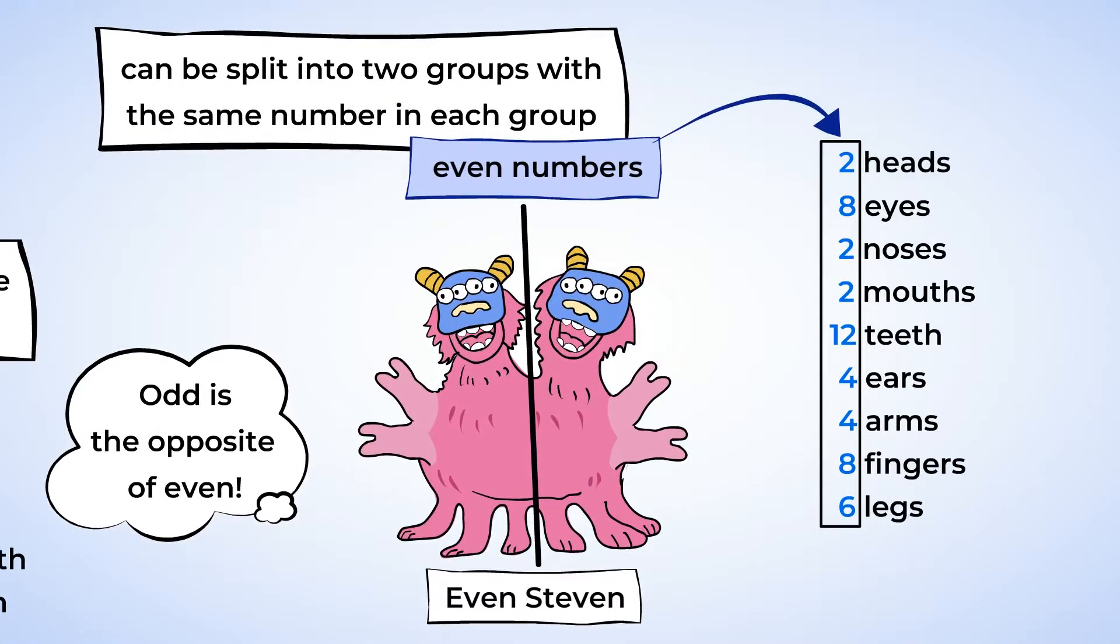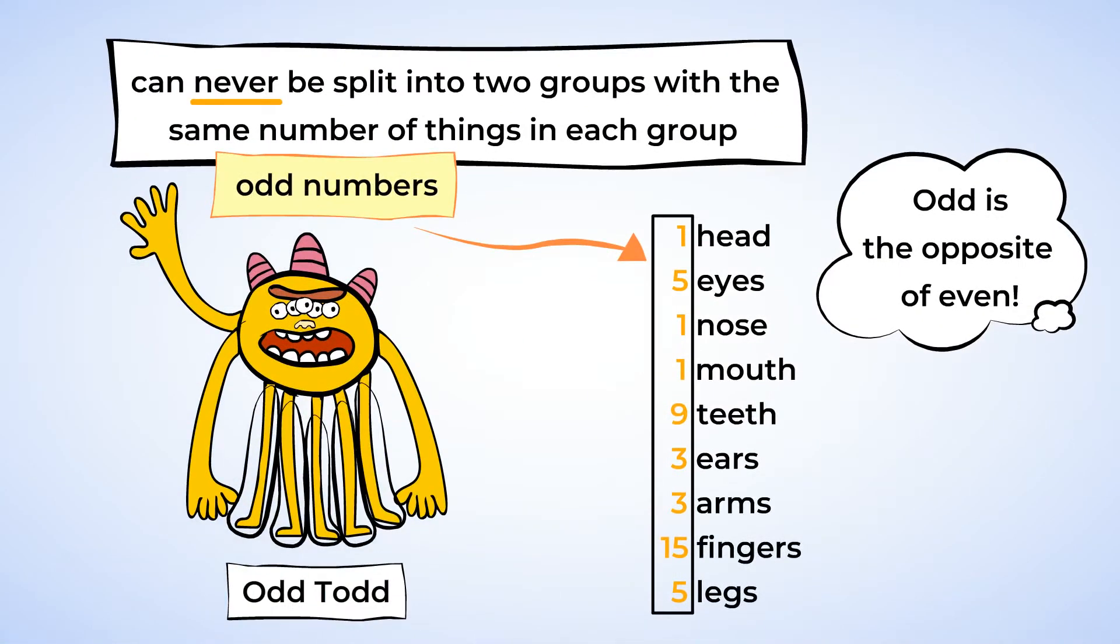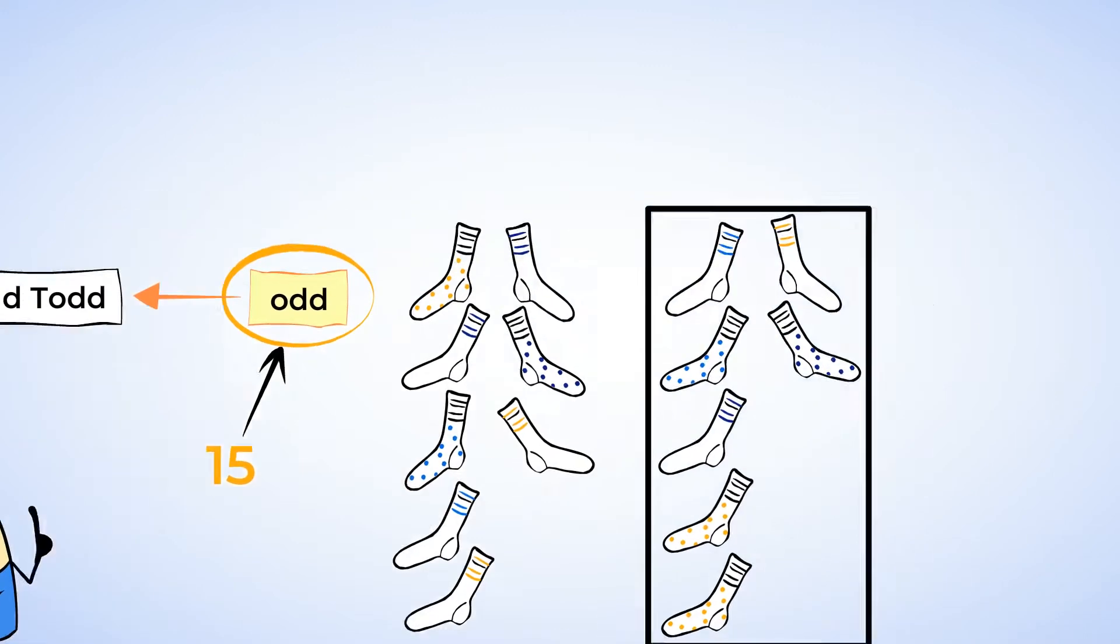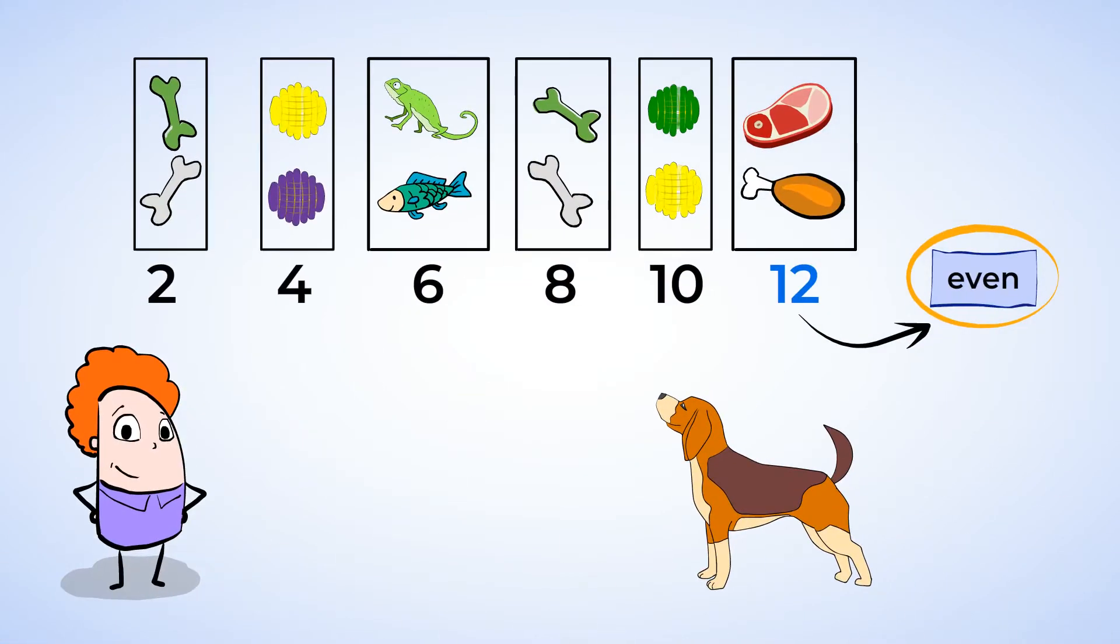An even number can be split into two groups with the same number in each group. And an odd number cannot be split that way. One group will always have one more than the other. We learned that one way to tell if a number is even or odd is by splitting the number of objects up, lining them up, and seeing if the groups match or are equal.